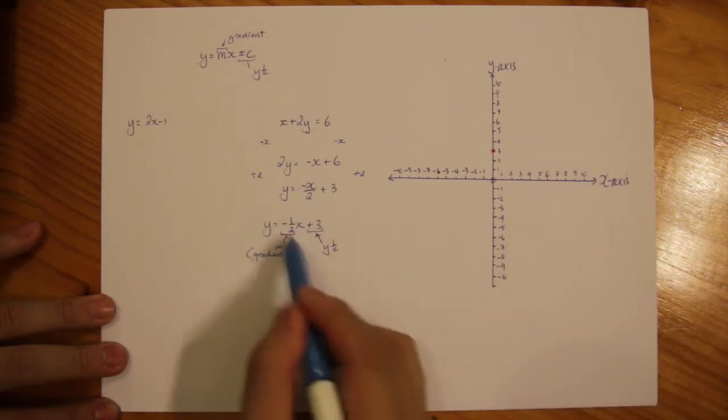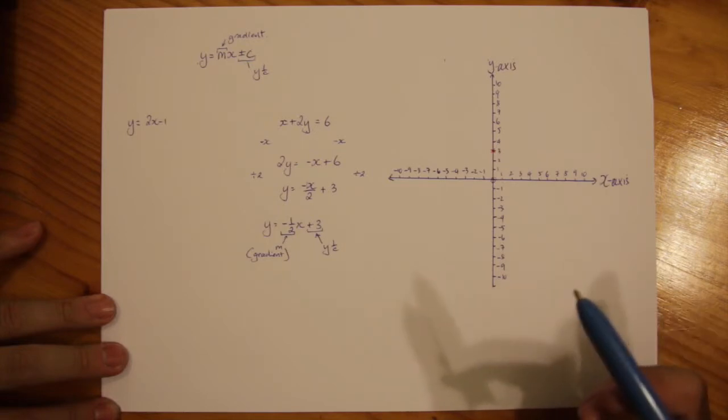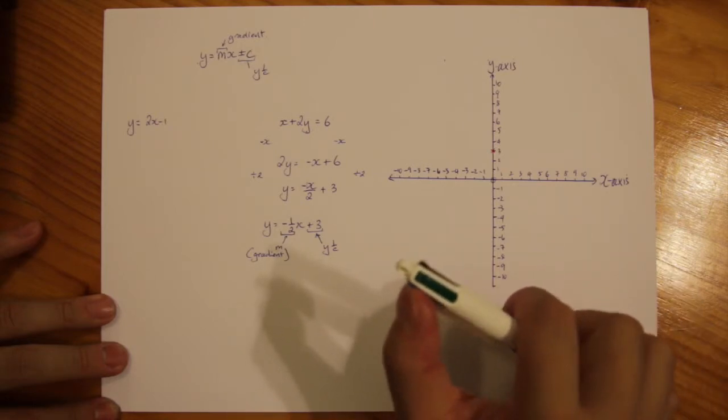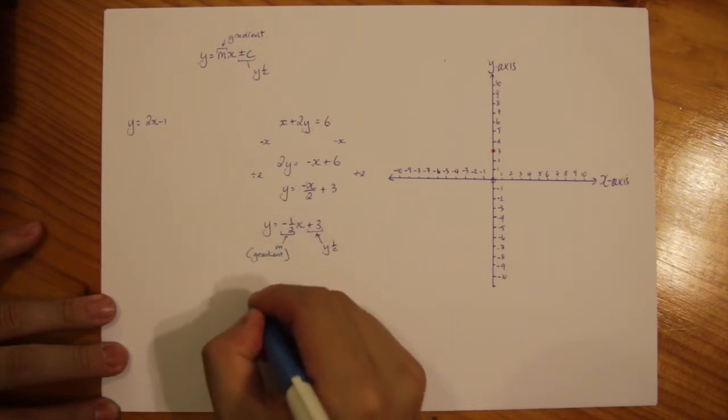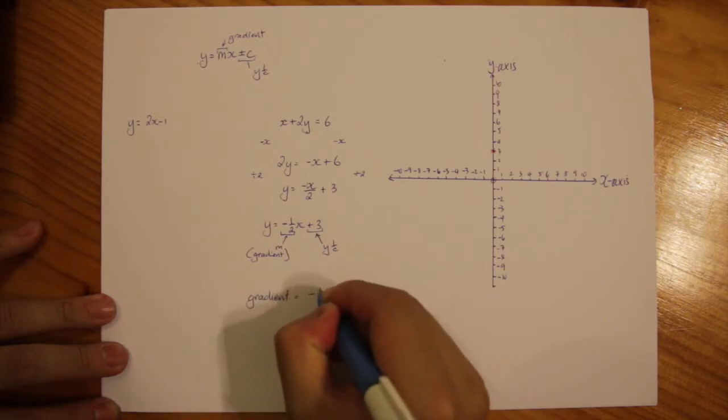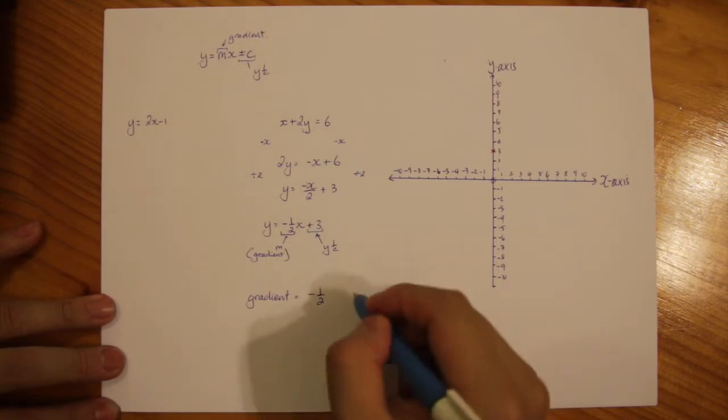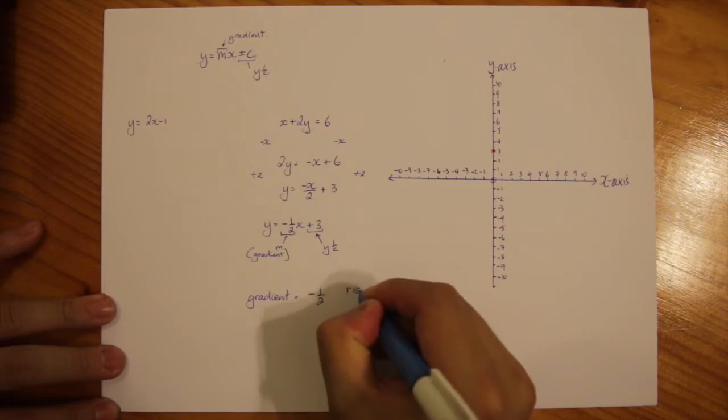But how do we actually work this out? We always need 2 points to join the dots to graph our linear equation. So what I'm going to do is take out this value of the gradient. Our gradient is negative half and from the previous video our gradient is also found by rise over run.